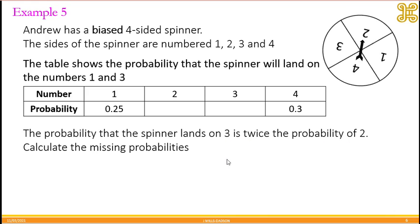So to work out the probability, because we don't know 2, we call it x. And 3, we call it 2x because it's 2 lots of x.